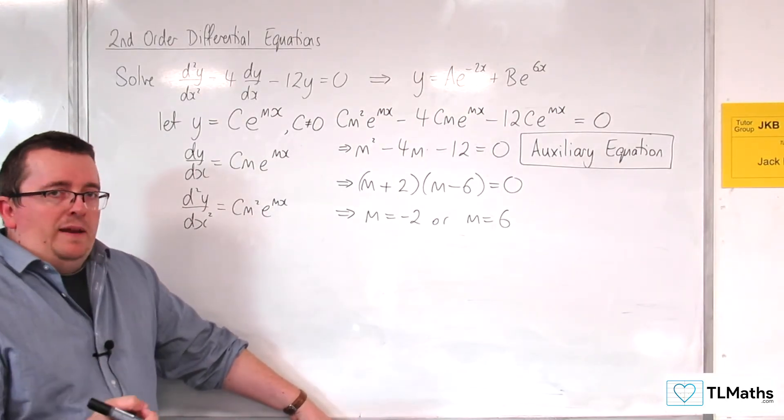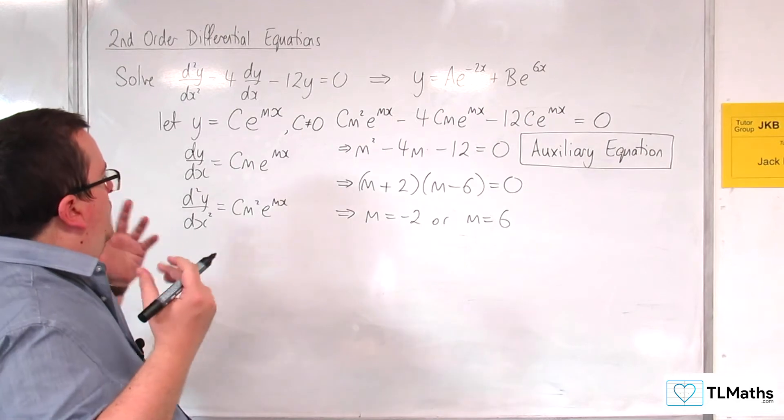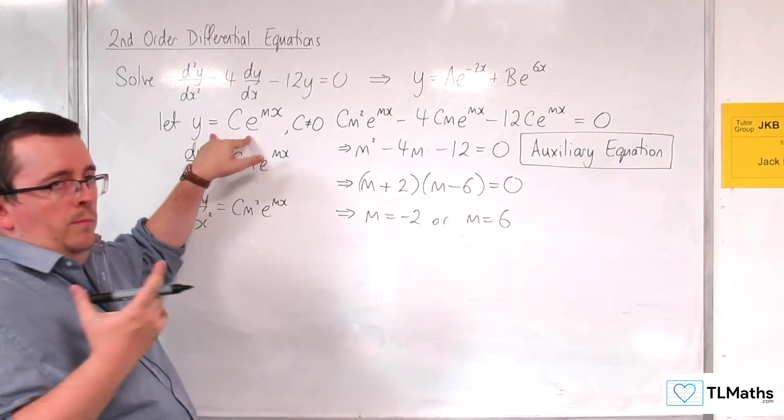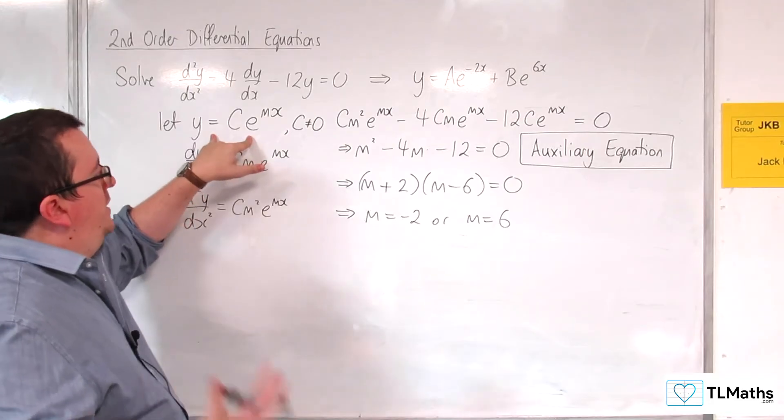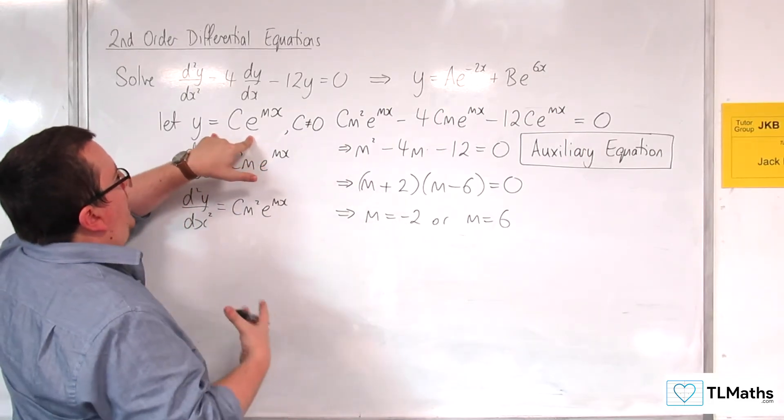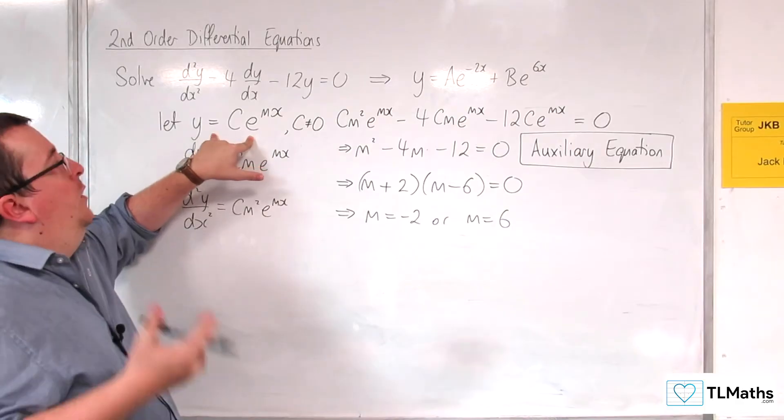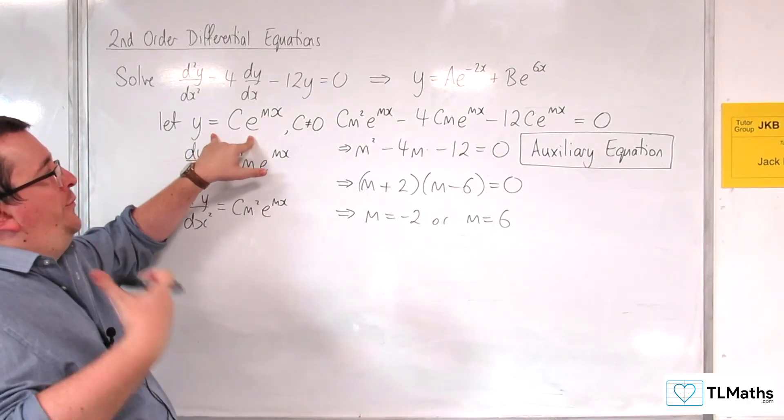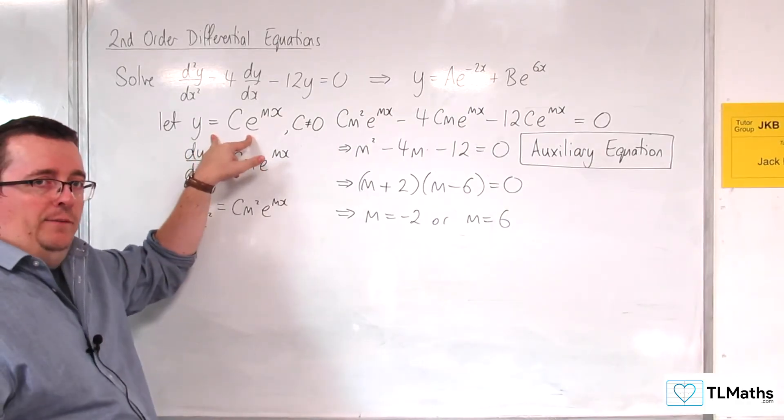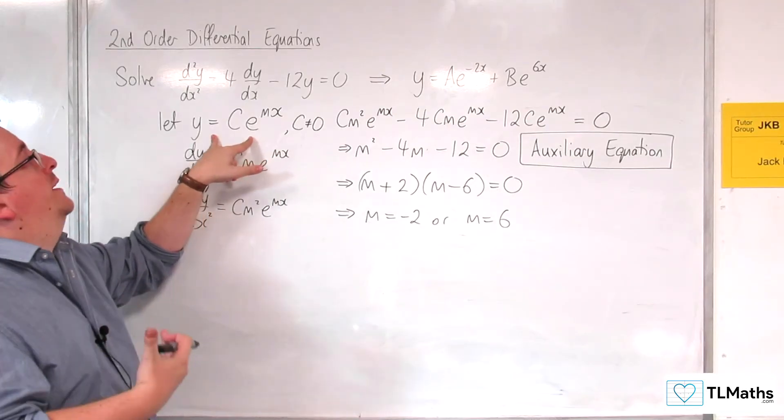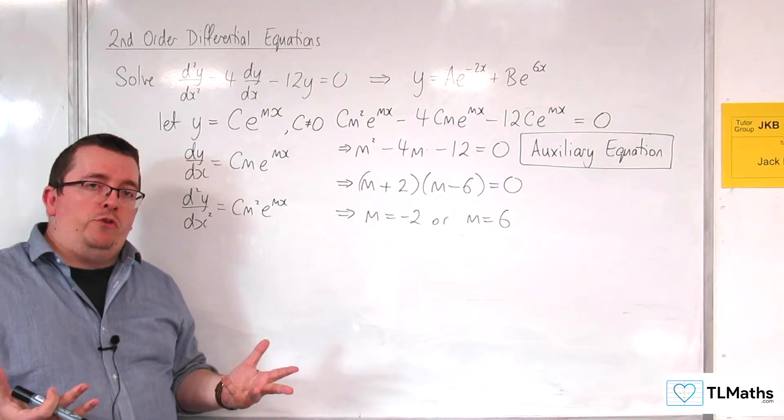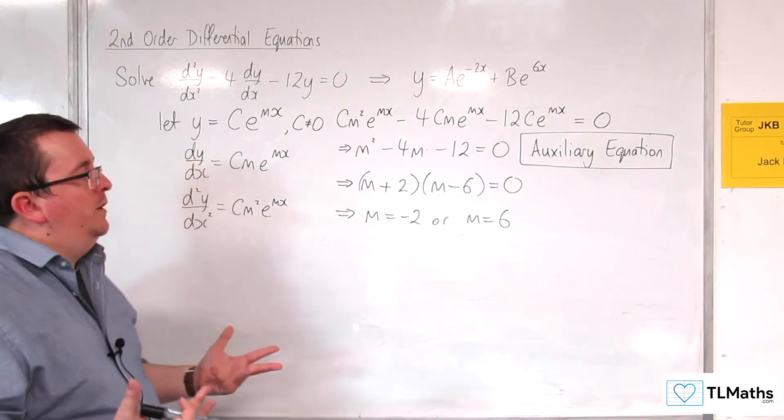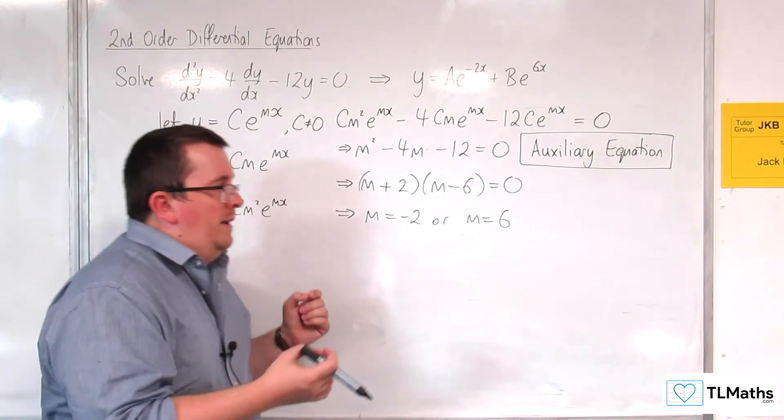That means that the y = ce^(mx) can either be y = ce^(-2x) or y = ce^(6x). So both of those would work if I substituted them into my second order differential equation.